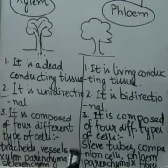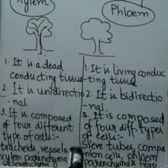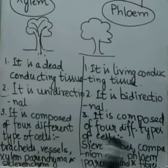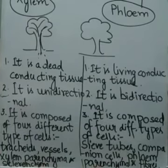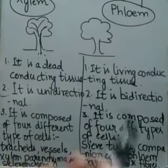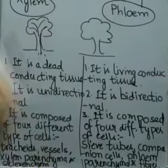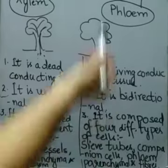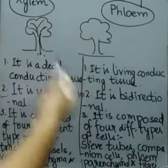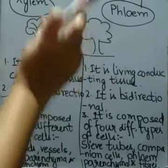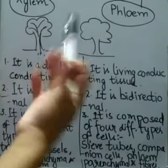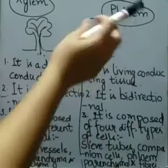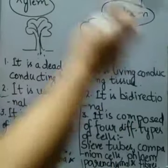Plants need energy and they get this energy from the food they prepare during the process of photosynthesis. There is a method by which they transport food to other parts of the plant. This transportation of food from leaves to other parts of the plant is known as translocation. Food is stored in plants in the form of sucrose.